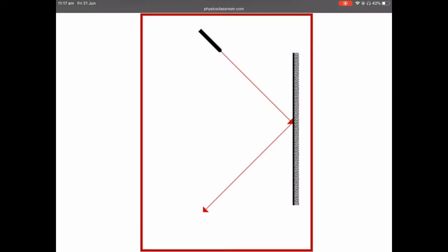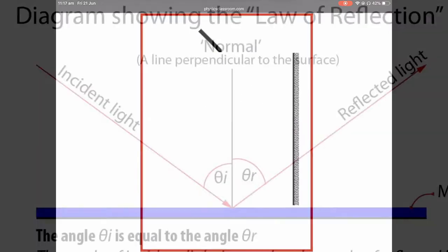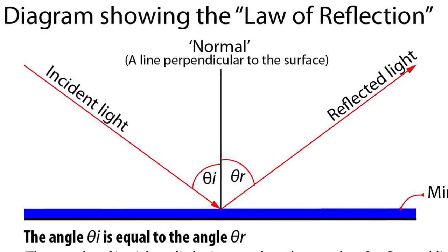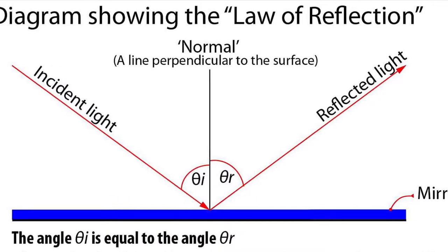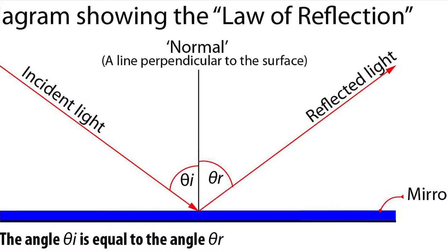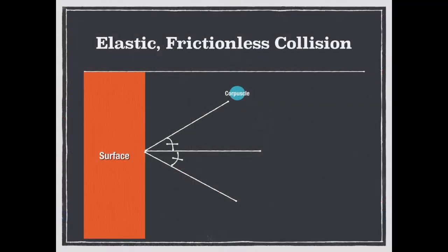Newton used his light model to explain many known properties of light, including reflection. It was known that when light reflects off a smooth surface, the angle of incidence is equal to the angle of reflection. This is also how an elastic, frictionless ball bounces off a smooth surface. The similarities between the two supported Newton's model.